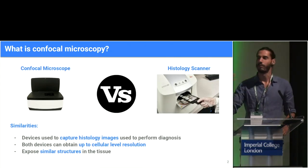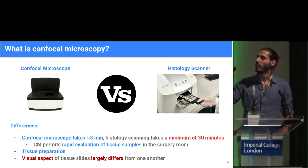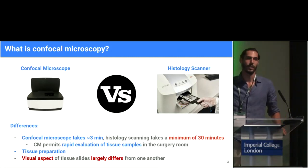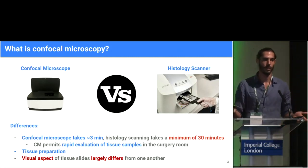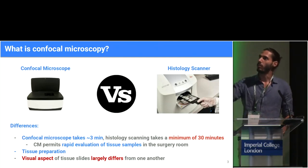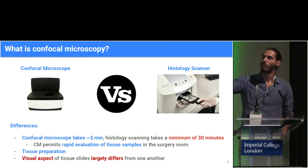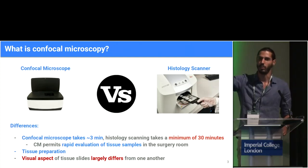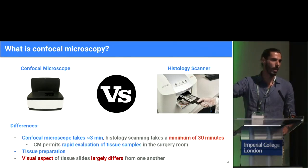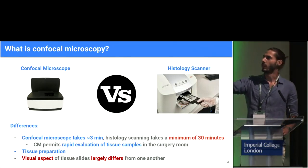But there are also a lot of differences, mainly regarding the speed of obtaining these images. A histology scanner needs some preparation of the samples — basically to prepare a sample it takes from 30 minutes to one to two days. Comparing that to confocal microscopy, you can obtain a scanning of a tissue in three minutes with the confocal microscope. This is great because you can perform rapid evaluation of tissue samples directly in the surgery room.